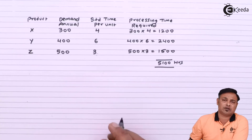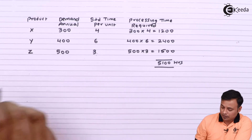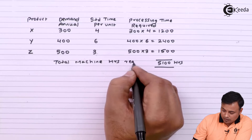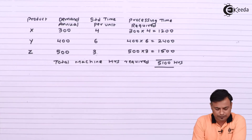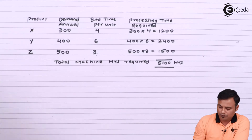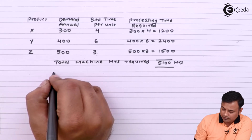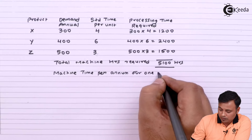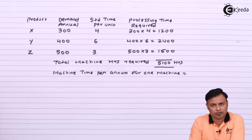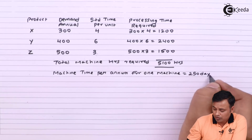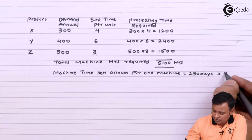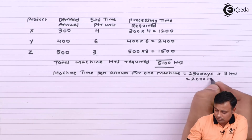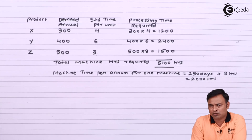Now, how much are the machine hours available annually for one machine? This is my total processing time required — 5100 hours — and I need to find out the number of machines required. Machine time per annum for one machine will be 250 days × 8 hours, that is 2000 hours. So if we buy one machine, it will be available for 2000 hours.